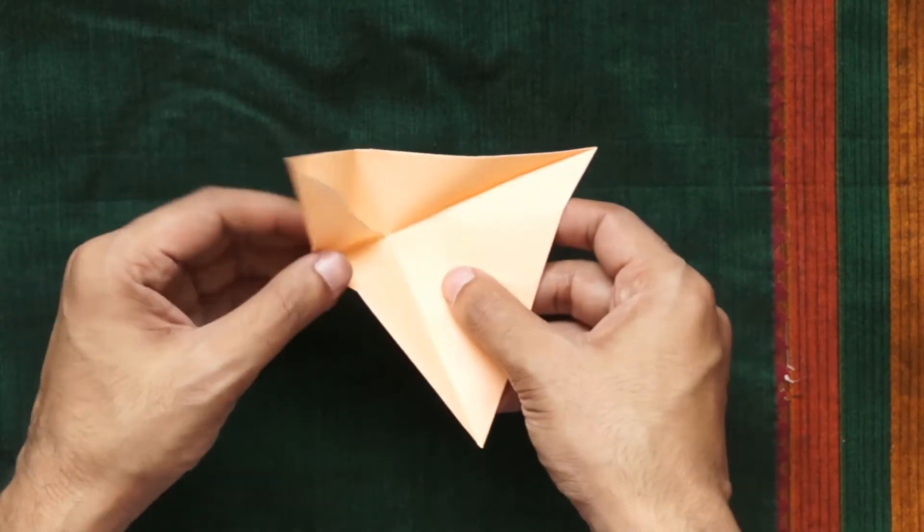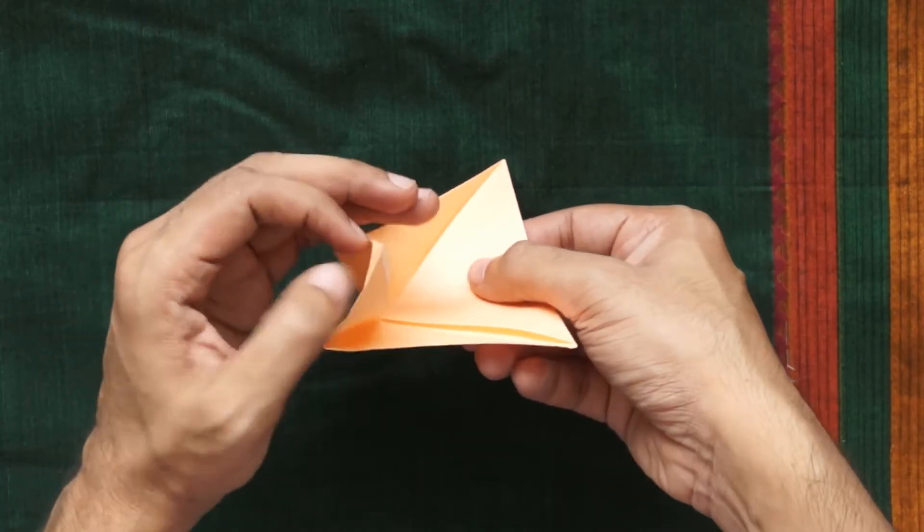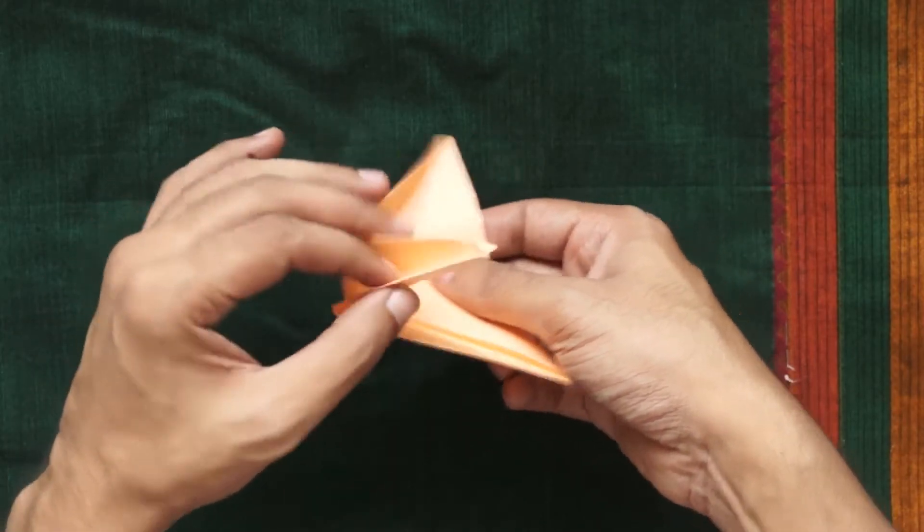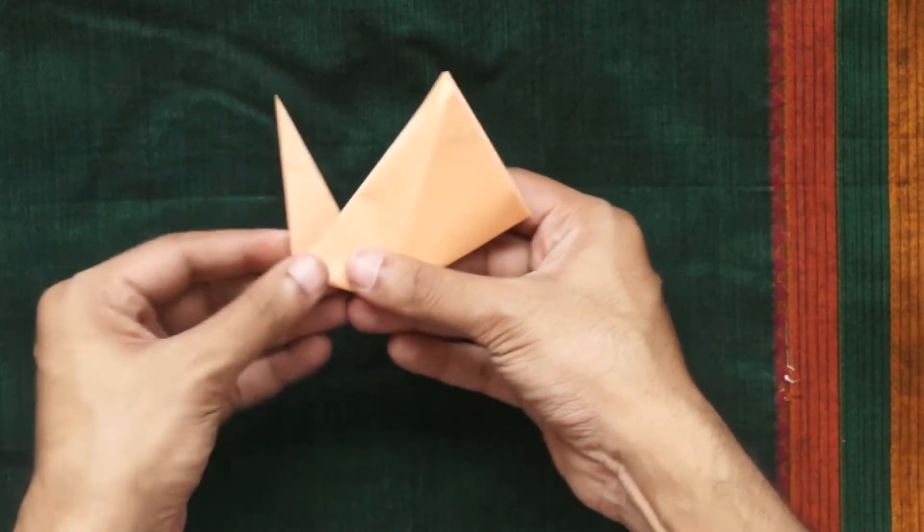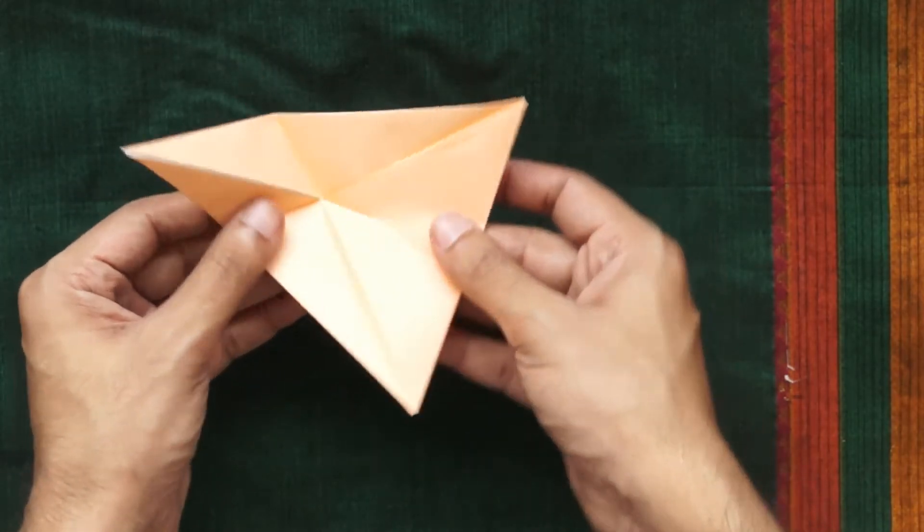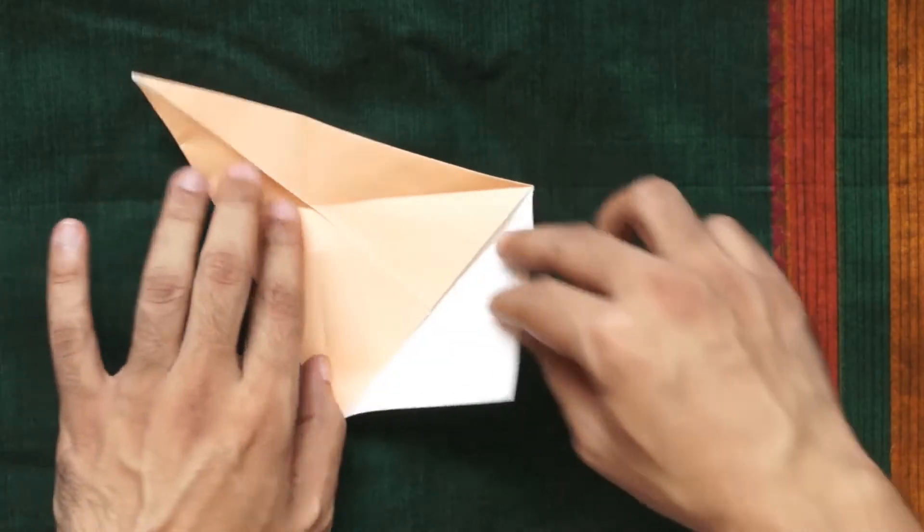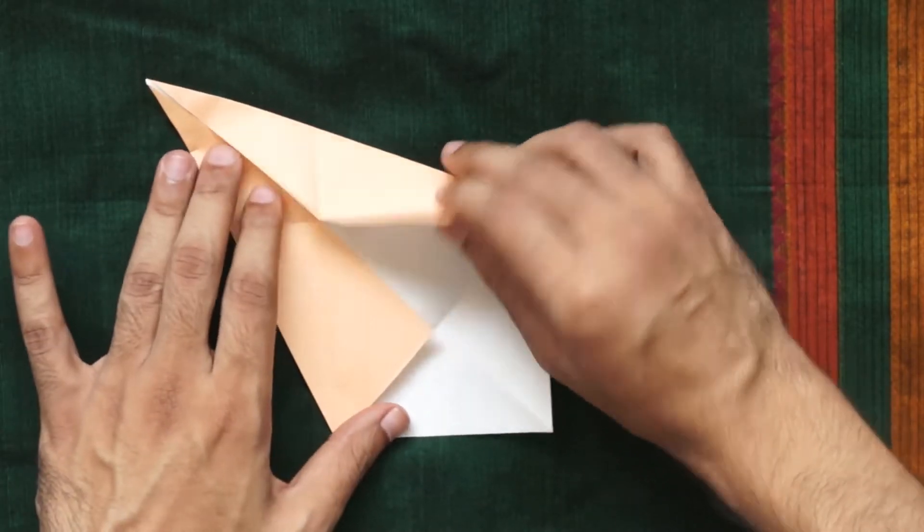Inside reverse fold the point of the triangular shape upwards like this when the model is folded in half. Strengthen the creases of the inside reverse fold without too strongly folding the rest. Unfold the last fold and also the fold of the broad triangle towards the bottom.